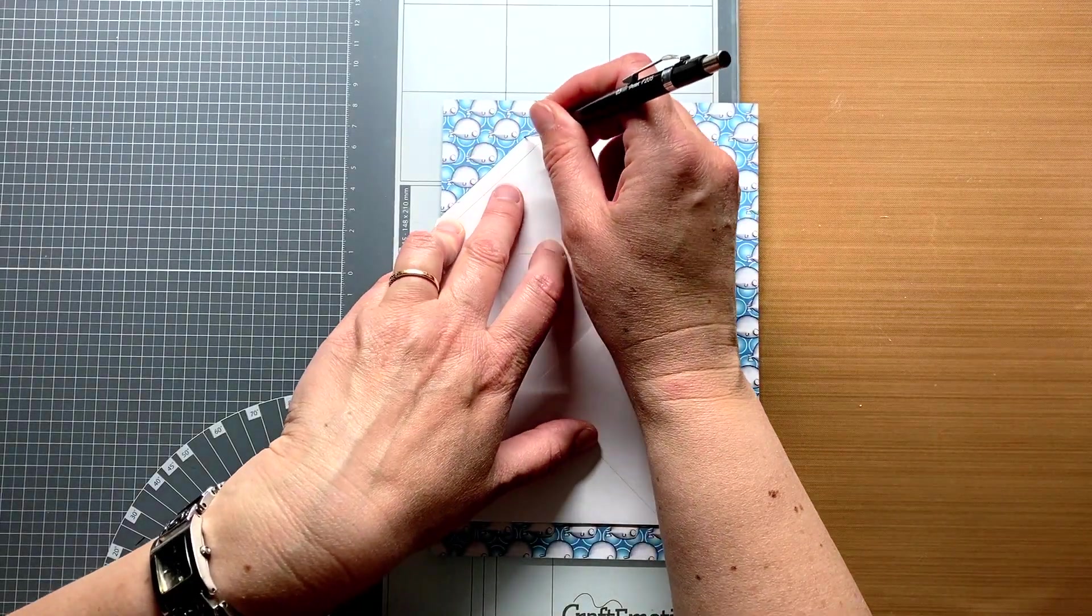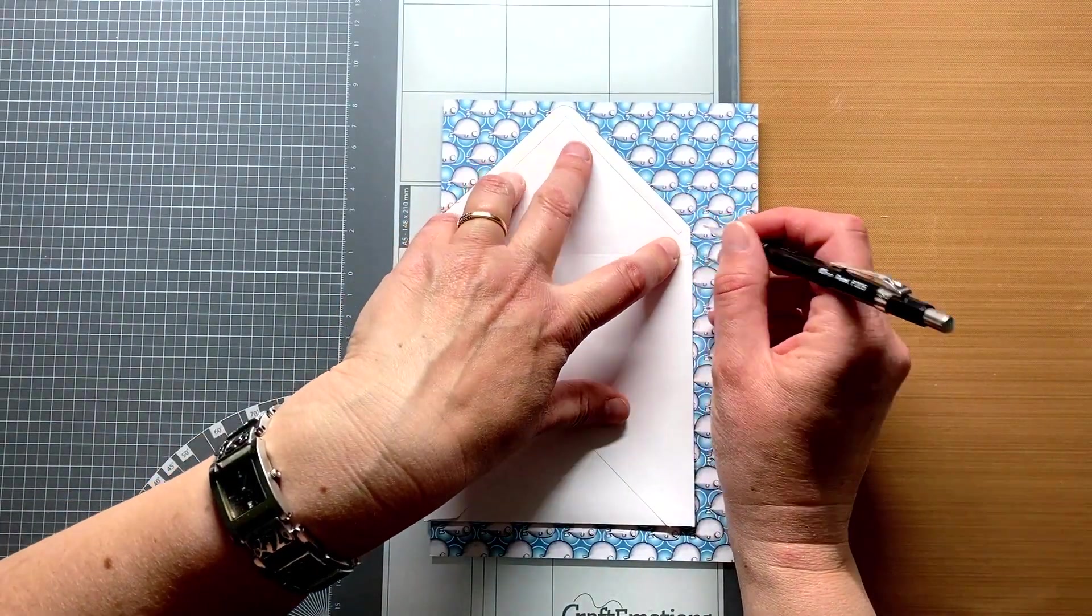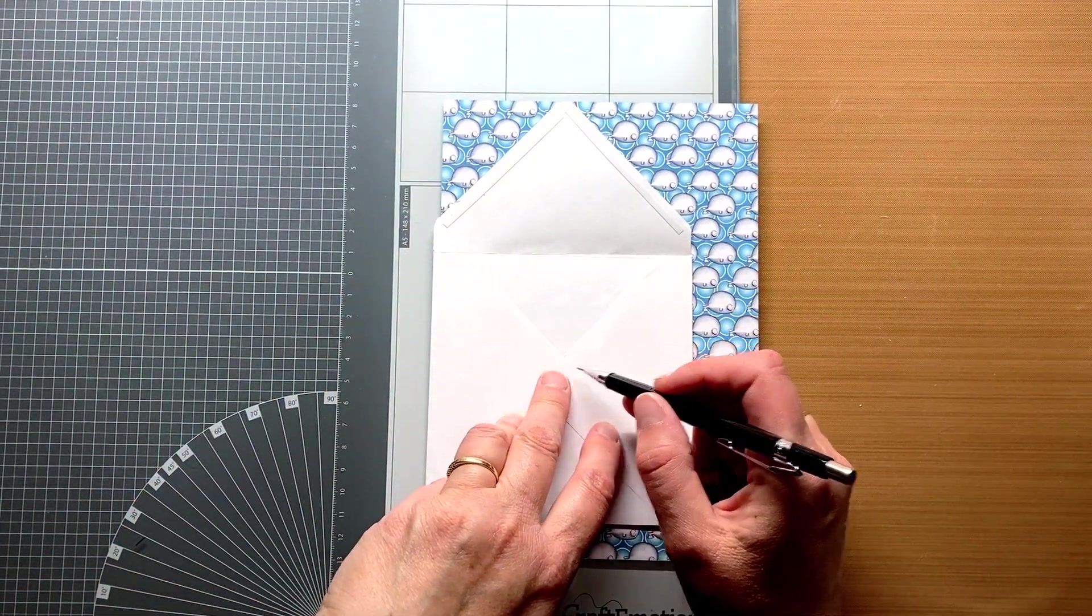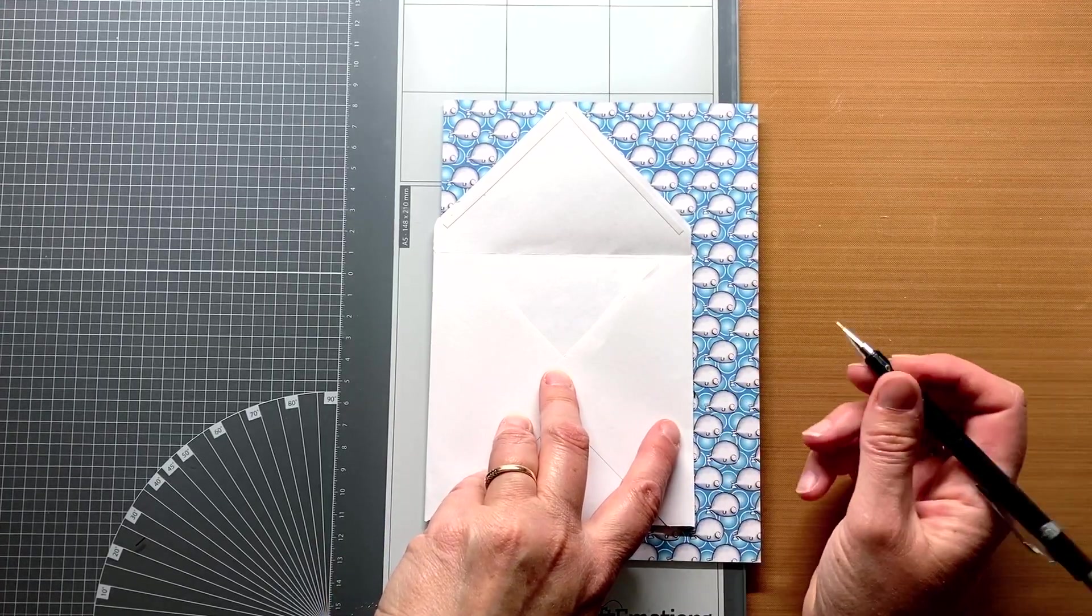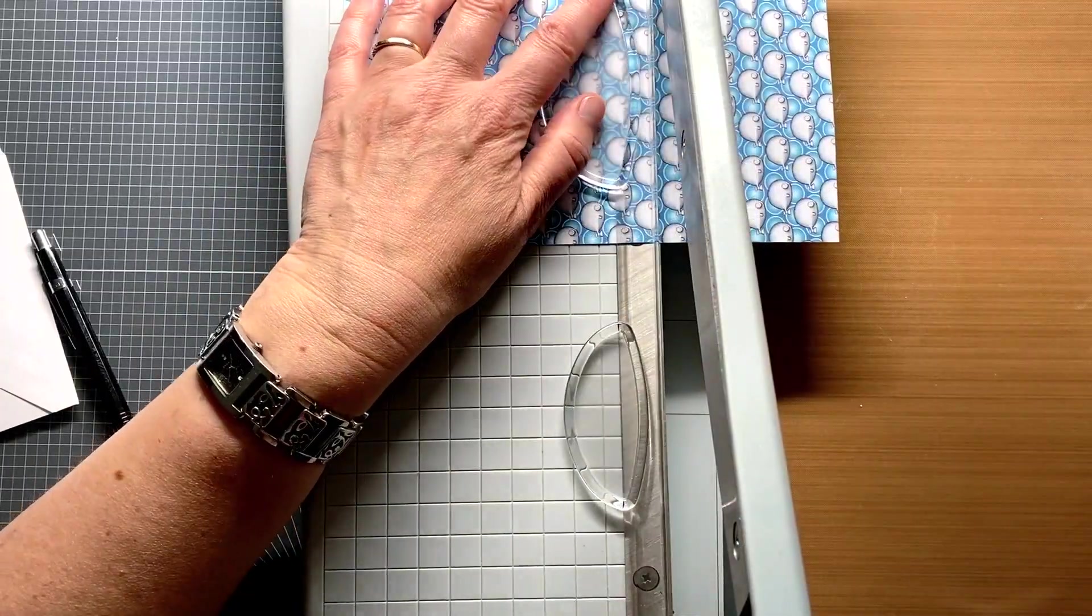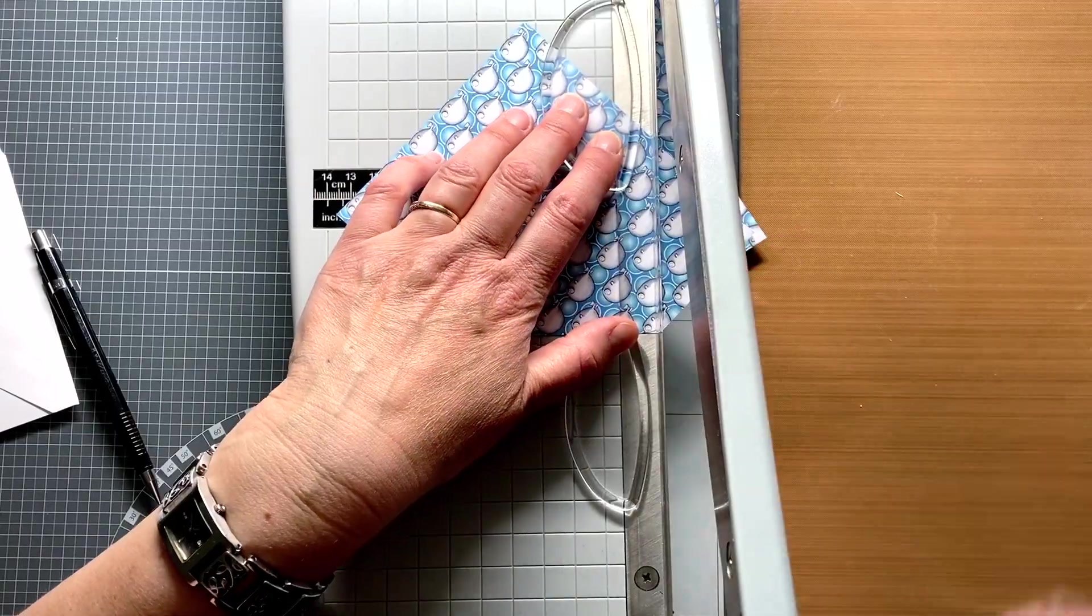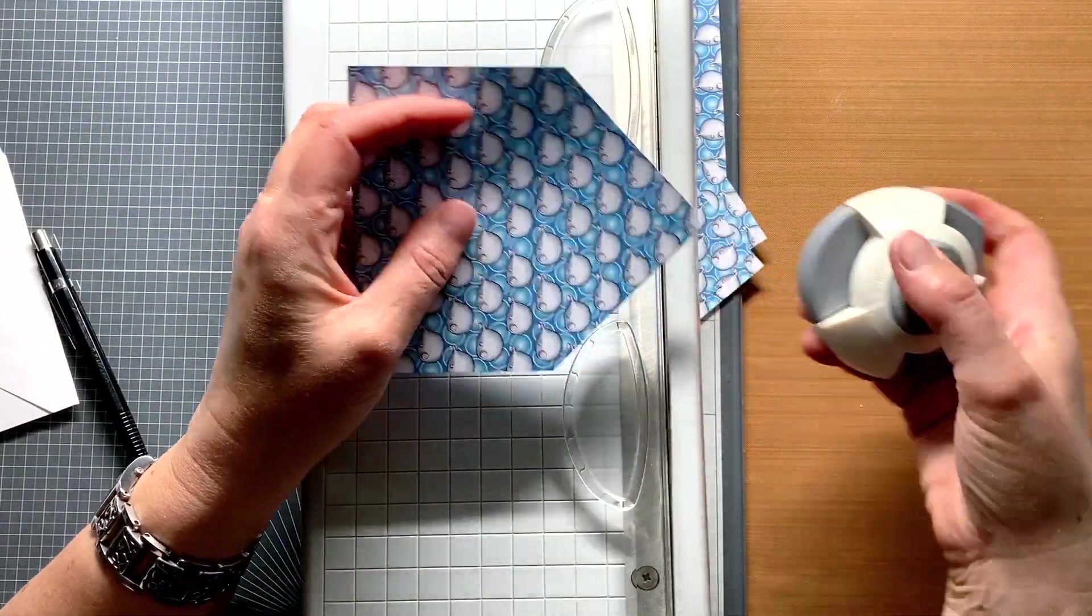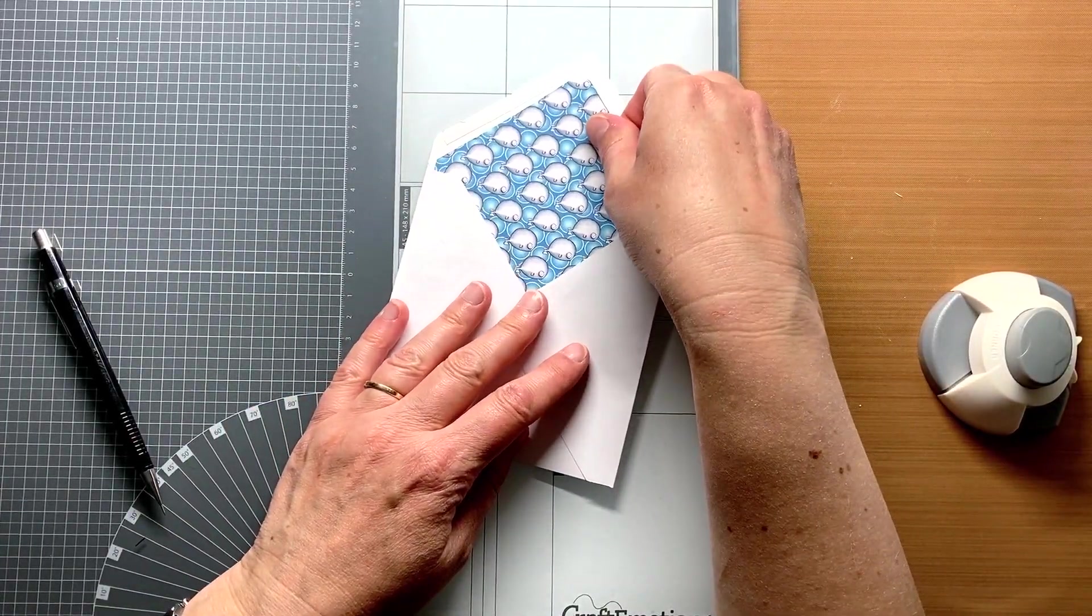Now I trace the shape of the flap of the envelope onto the paper. Then I trace it down to just a little below where you still want to see the paper, which is about here. You don't have to put patterned paper into the whole envelope. Now I can cut the piece to size. The top corner I also round off with a corner punch, and this piece of paper now fits exactly into the envelope.